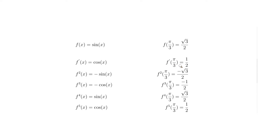Cosine at π/3 equals 1/2, so that's our first derivative value. For the second derivative, we take the derivative of cosine, which is minus sine. We've already calculated sine(π/3) to be √3/2, so the second derivative at π/3 is -√3/2. The third derivative is the derivative of minus sine, which is minus cosine, and minus cosine at π/3 is -1/2, since cosine(π/3) = 1/2.